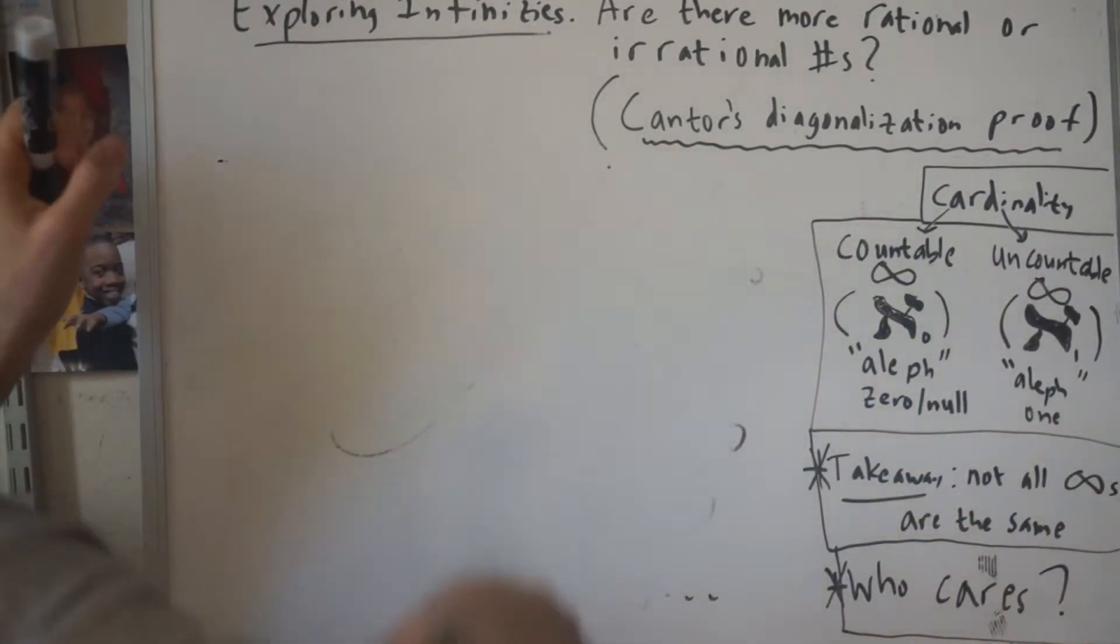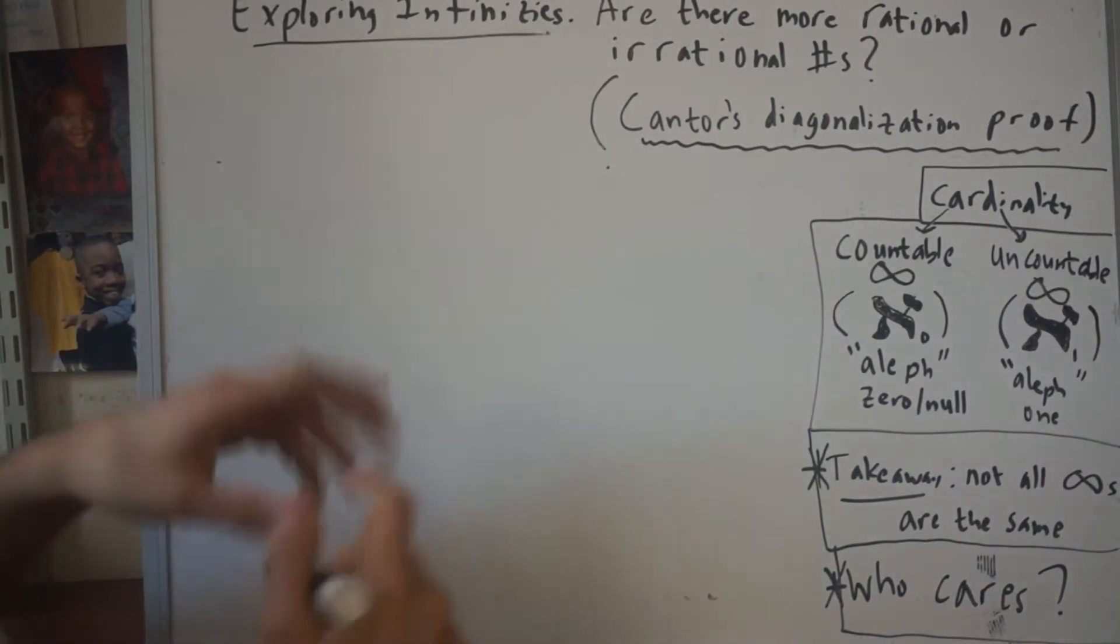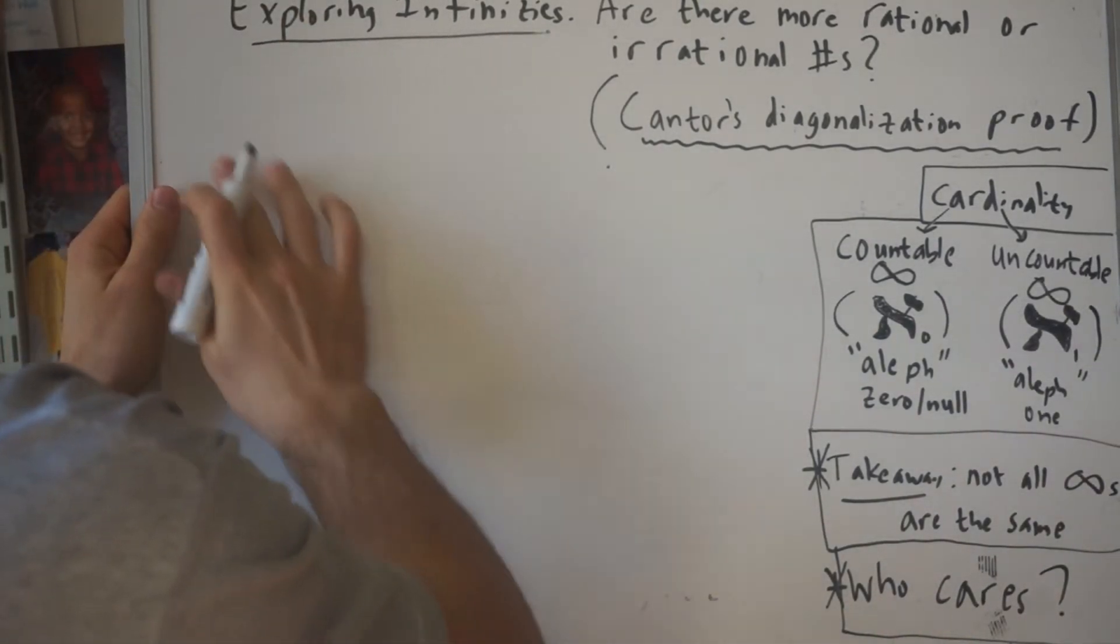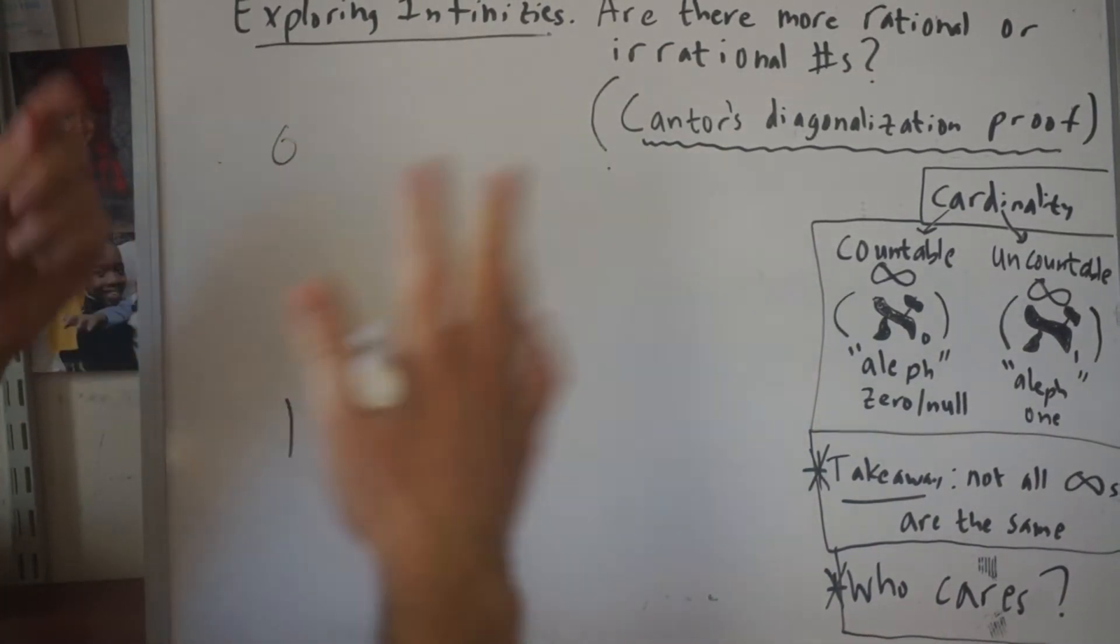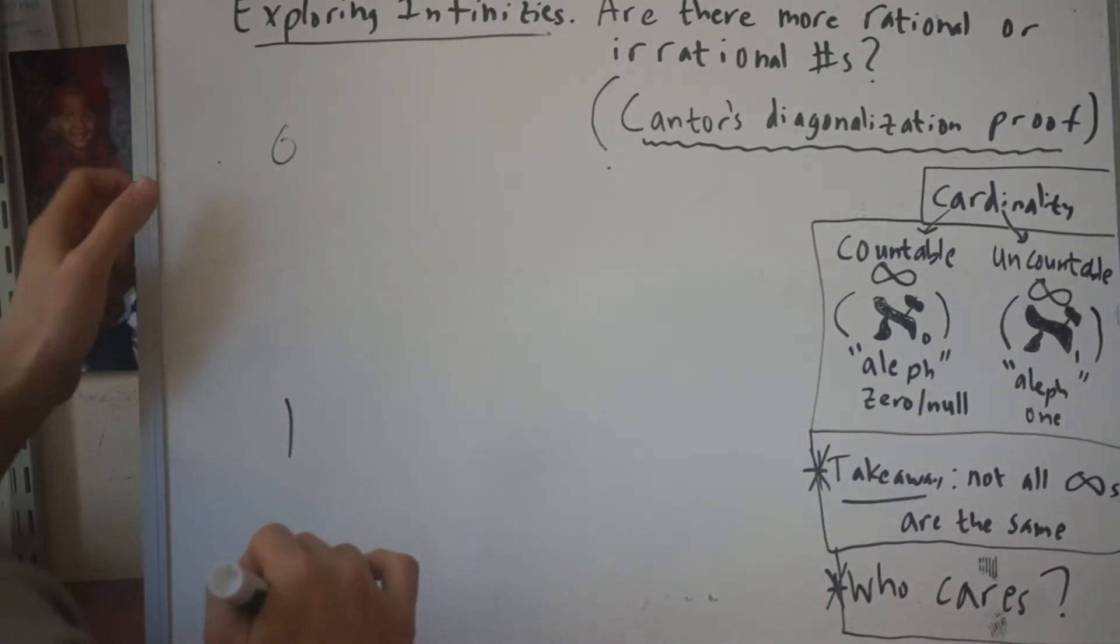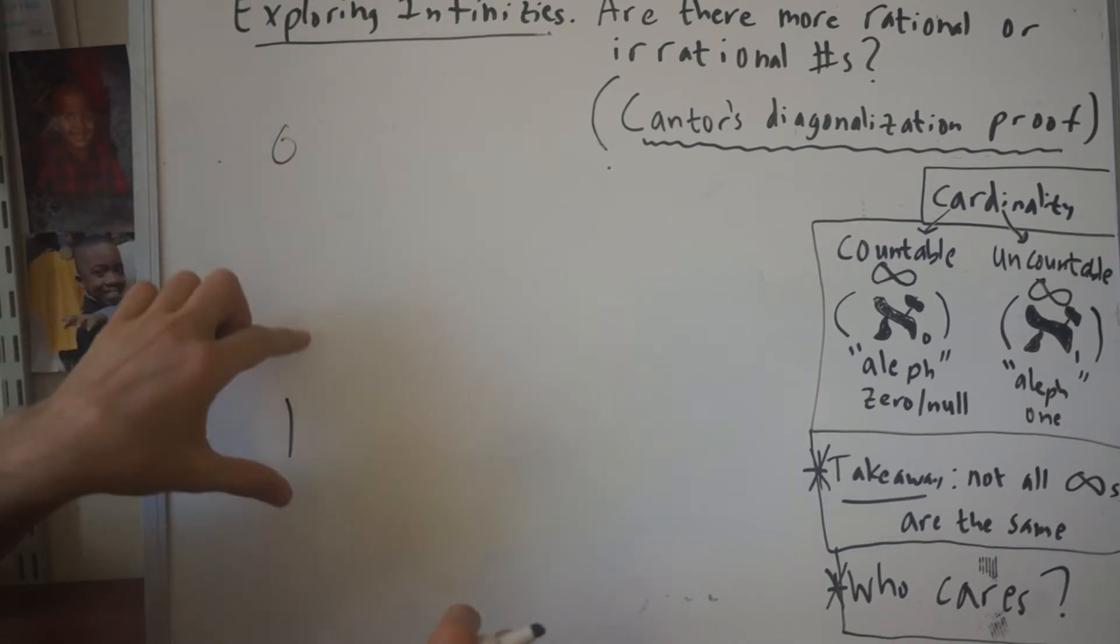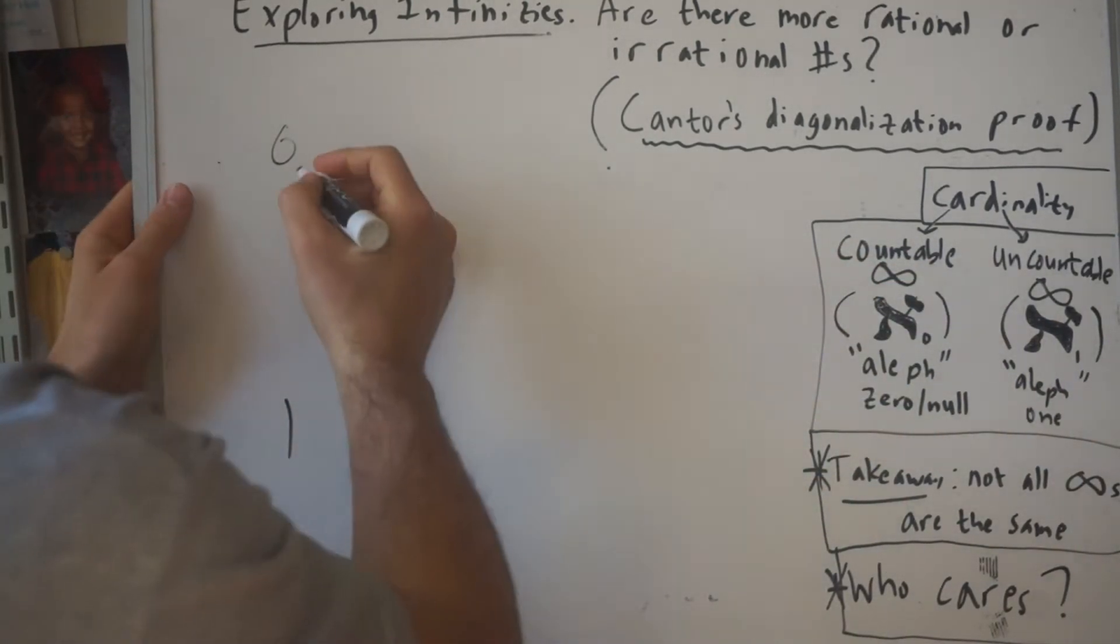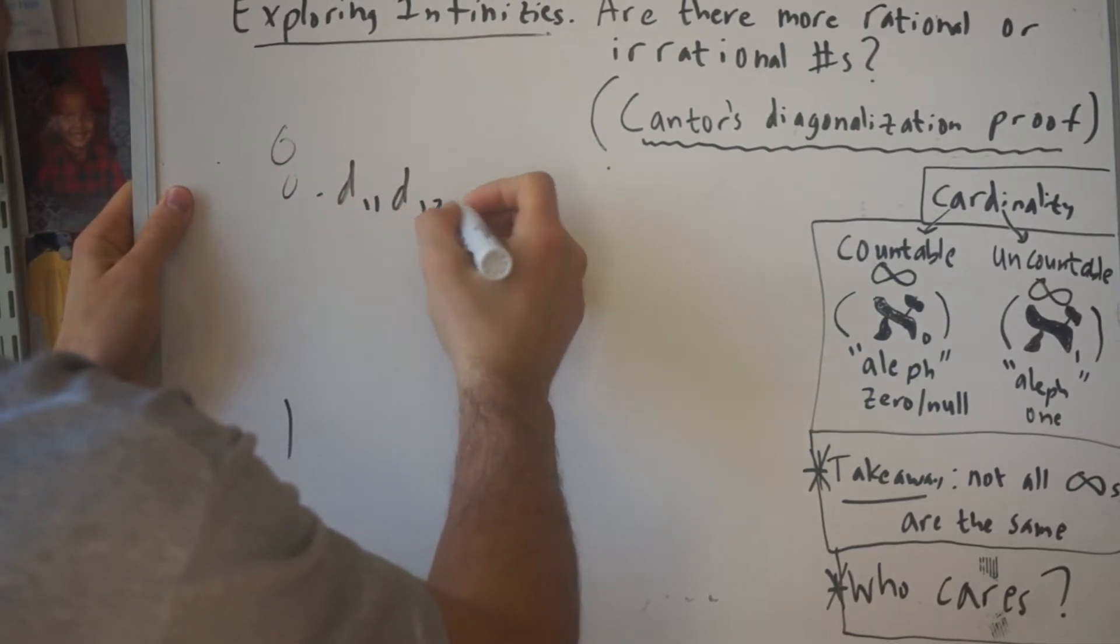Now here is the next part. Using that idea of a snake, we might say, okay, well those are the rational numbers. How about the irrational numbers or the real numbers which include both the rational and the irrational? What we're going to do is consider the numbers only between zero and one. Imagine we could list all of the numbers between zero and one. It would be an infinite list, but we should be able to count it.